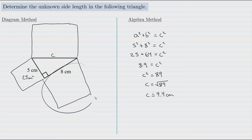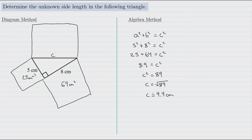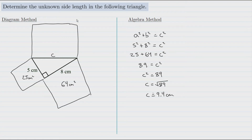Similarly, the area of this square would be 8 times 8 since all the side lengths are 8, and 8 times 8 is 64 centimeters squared. According to the Pythagorean theorem, these two areas should add up to the area of the square built on the hypotenuse of the triangle. So if I add 64 and 25, that's where I get 89 centimeters squared.